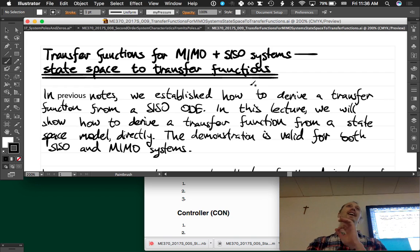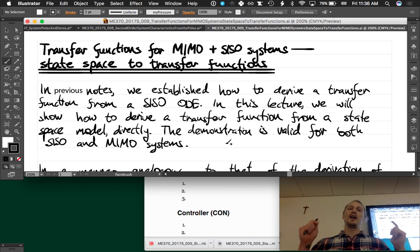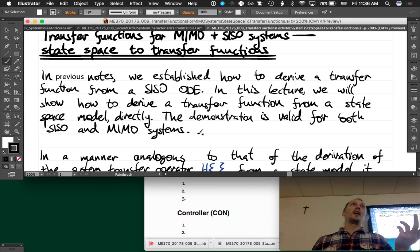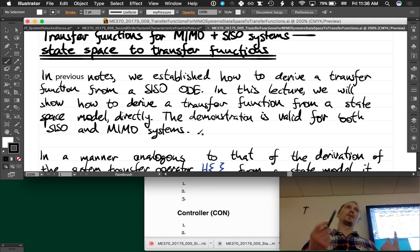In previous notes, we established how to derive a transfer function from a single input single output ODE. In this lecture we'll show how to derive a transfer function from a state space model directly, which would be great because a lot of times when we do our modeling we don't end up with an input output ODE, we end up with a state space model.